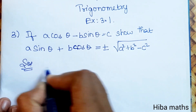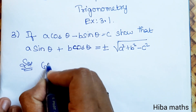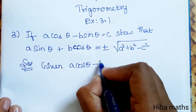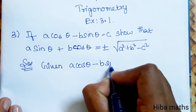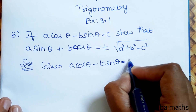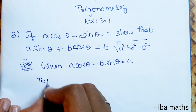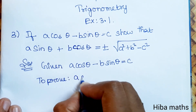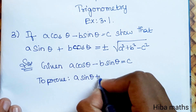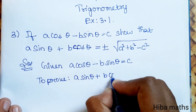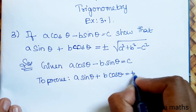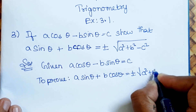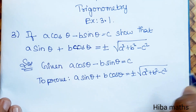So the solution: it is given that a cos theta minus b sin theta equals c. We will prove that a sin theta plus b cos theta is equal to plus or minus root of a squared plus b squared minus c squared.